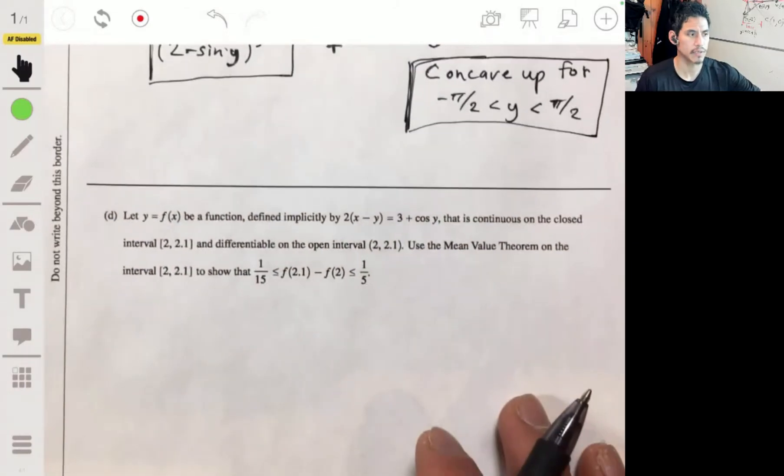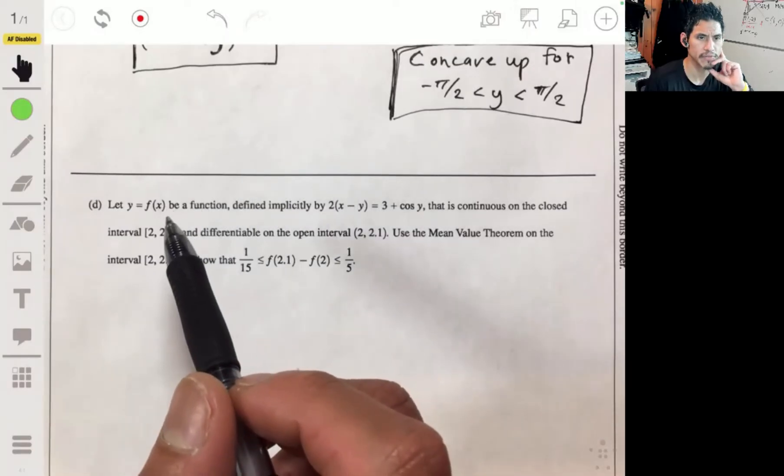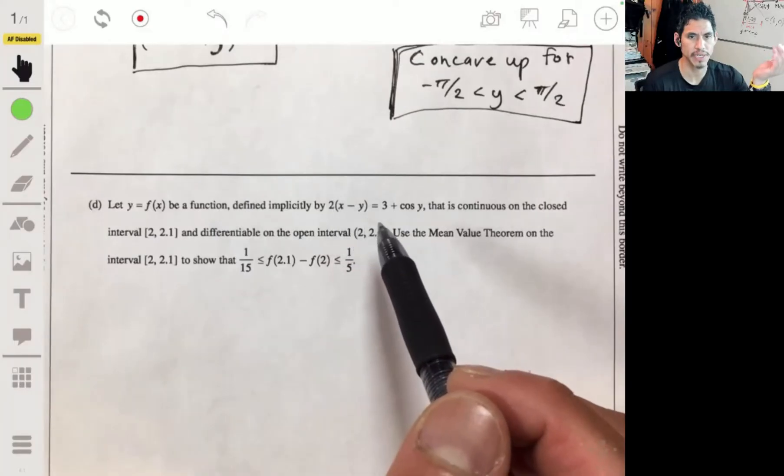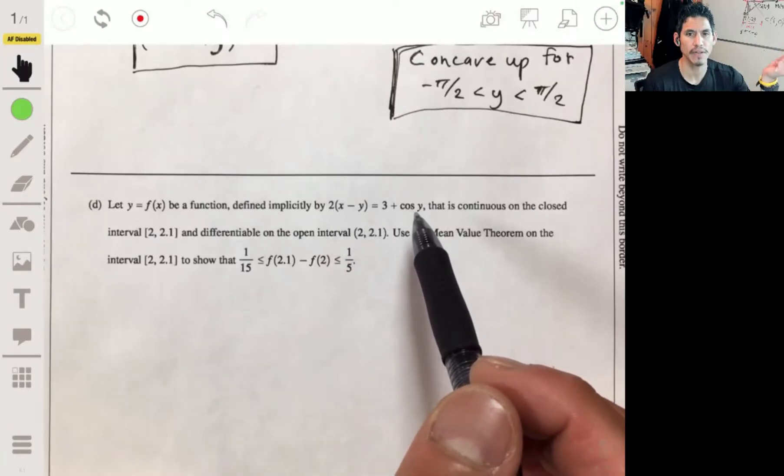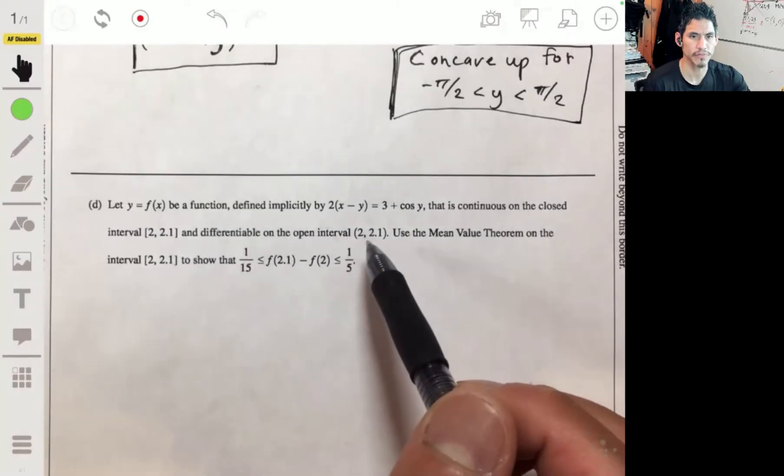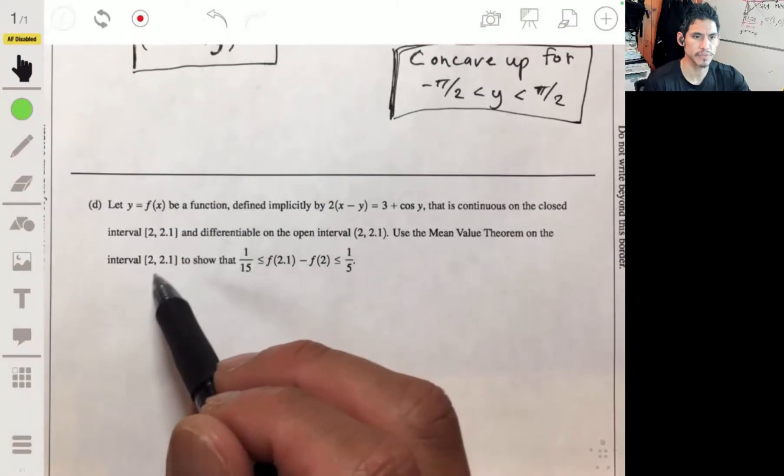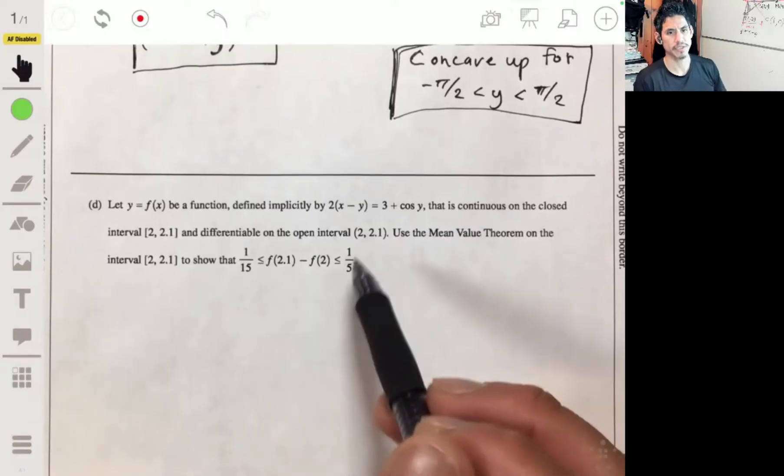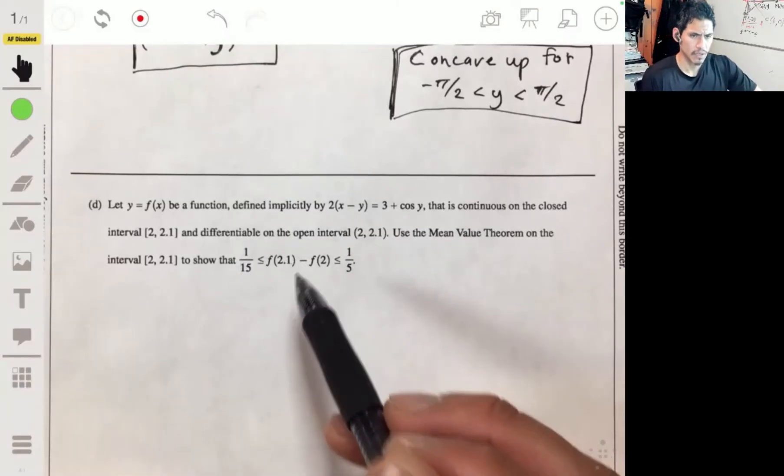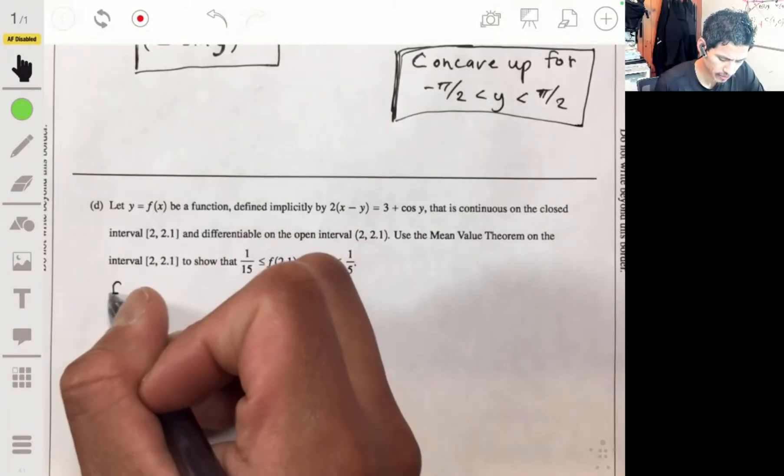All right, last part. Let y be equal to f of x be a function defined implicitly by the original equation, two times x minus y equal to three plus the cosine of y. And continuous on the closed interval from 2 to 2.1, and differentiable on the open interval from 2 to 2.1. And we're going to use the mean value theorem on the interval 2 to 2.1 to show that this inequality holds. To show that this is true.